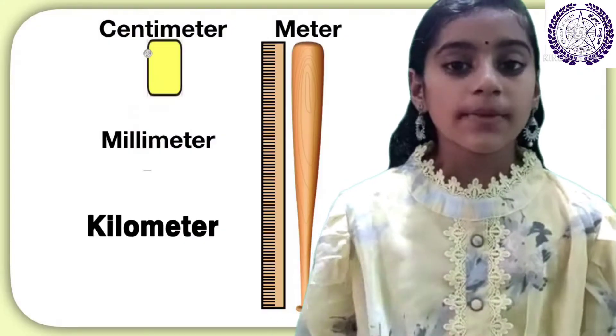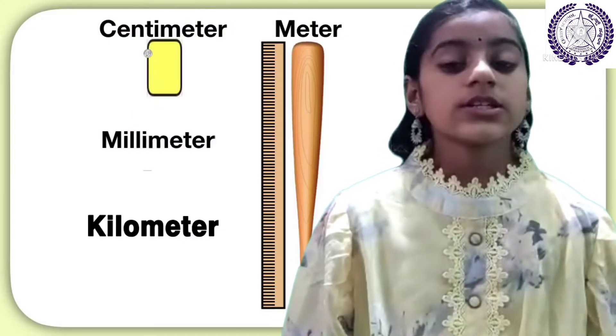In the metric system, length or distance is expressed in the terms of kilometers, meters, centimeters and millimeters.